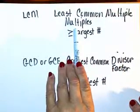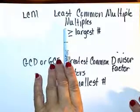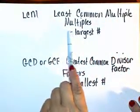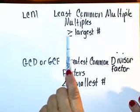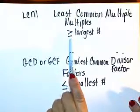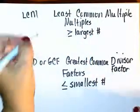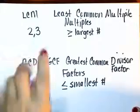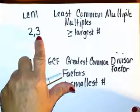To find the least common multiple, we're always going to think about the fact that it has to be greater than or equal to the largest number. So if we had numbers like two and three, the least common multiple would have to be greater than or equal to three.